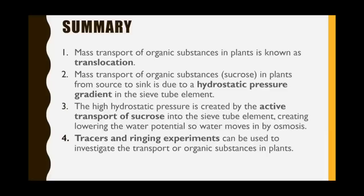In summary: mass transport of organic substances is known as translocation. Mass transport of organic substances such as sucrose or glucose in plants goes from a source — the leaf — to a sink — the respiring cells — and that movement is due to changes in hydrostatic pressure. The high hydrostatic pressure at the source site is created by the active transport of sucrose into the sieve tube element, which lowers water potential so water then moves in by osmosis. TRACER and ringing experiments can be used to investigate transport of these organic substances, and in the new spec papers those have been quite common application questions.